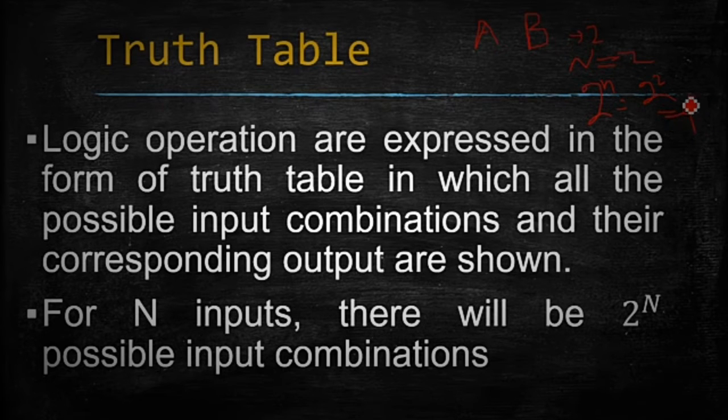If inputs are two, there are four combinations for two inputs. If inputs are three, A, B and C, it means three inputs. Then combinations are 2 raised to power N, N equals 3, it means eight. Understood?